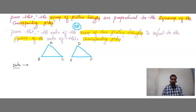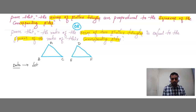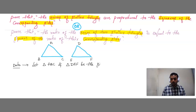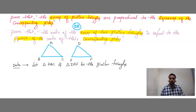I am going to name this triangle as ABC and this triangle as DEF. So first we write the data. The two similar triangles are Triangle ABC and Triangle DEF. Let Triangle ABC and Triangle DEF be the similar triangles.